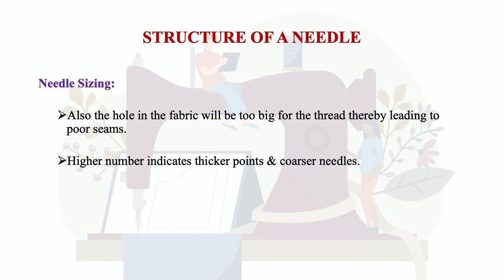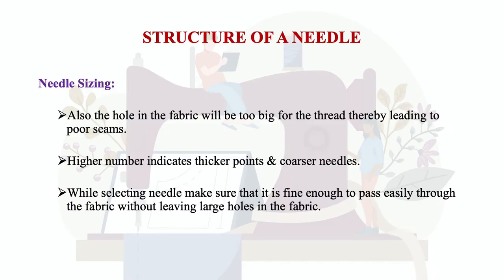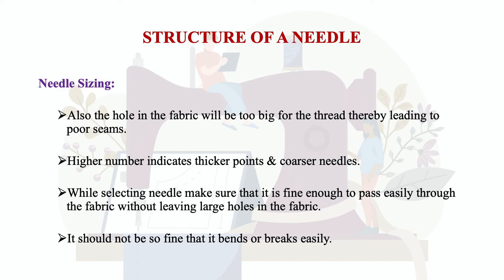A higher number indicates a thicker, coarser needle — for example, sizes 14 or 16 are used for coarser fabrics. While selecting the needle, make sure it is fine enough to pass easily through the fabric without leaving a large hole, but not so fine that it bends and breaks easily. The needle should be neither too fine nor too coarse.